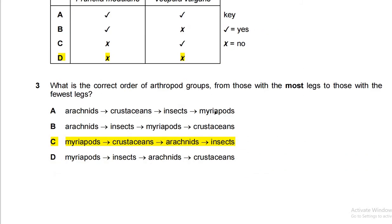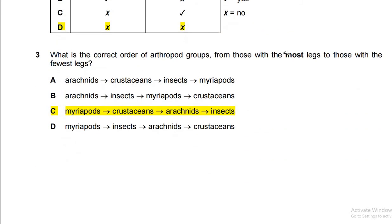Question three: what is the correct order of arthropod groups from those with the most legs to those with the fewest? There are four categories under arthropods. The most legs are found in myriapods — think centipedes — which have dozens of legs. Then crustaceans such as crabs have around four to six legs. Arachnids come next, followed by insects such as flies, bees, or ants which have six legs.